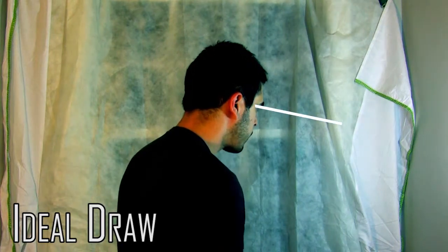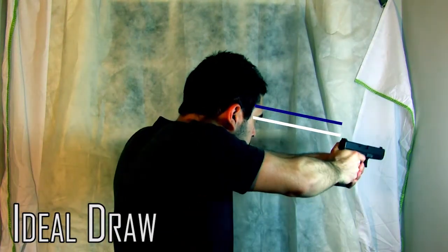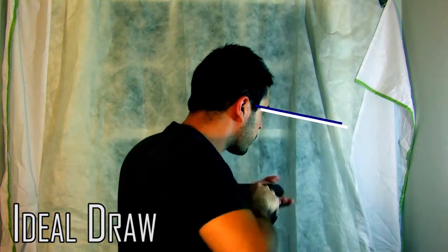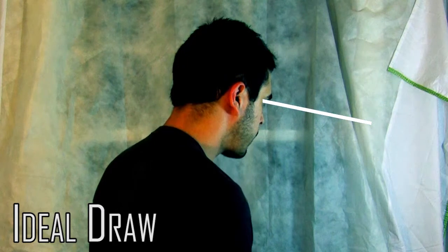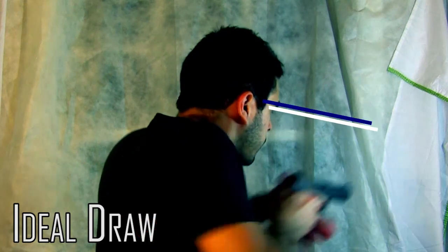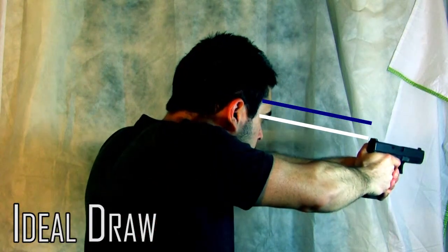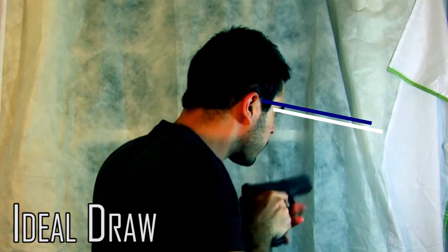First is the ideal draw stroke. In a perfect world, you do not want to move your head or eyes at all. This helps minimize excessive movements and overcorrections which you will have when you're in a pucker factor situation. The best way to do this is to start from the position you are going to fire your weapon in and do not move your head or eyes as you go for your weapon.